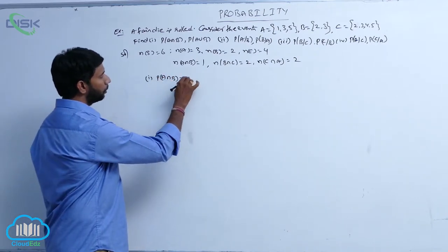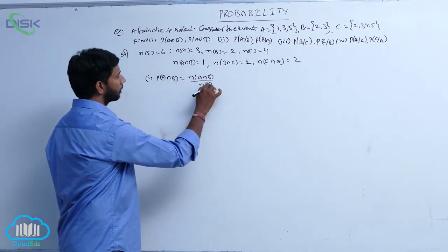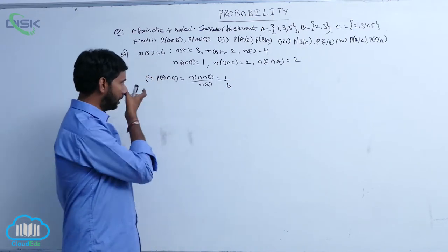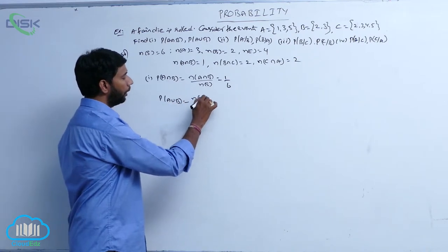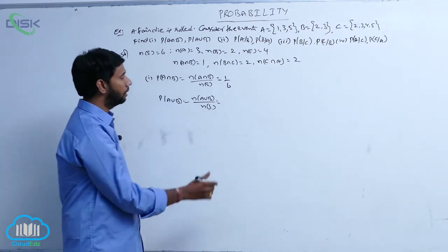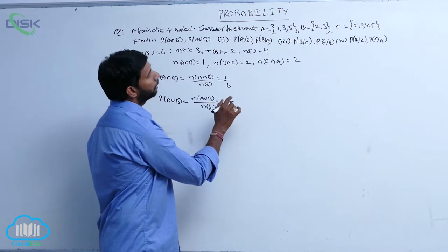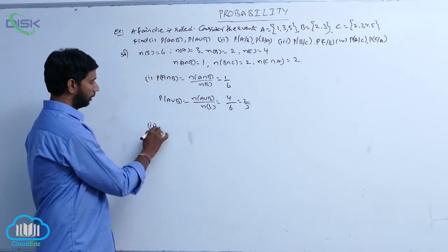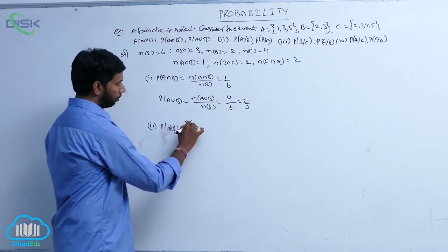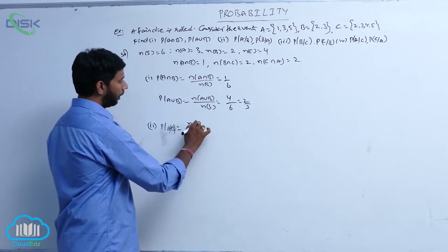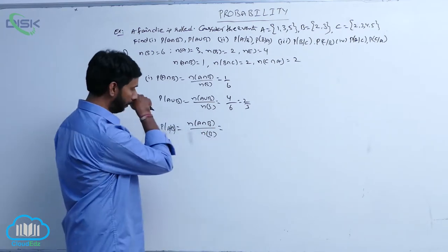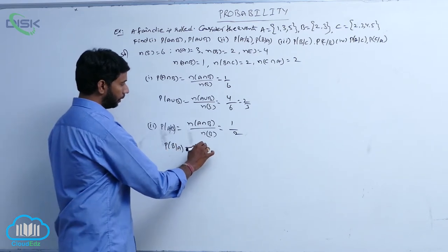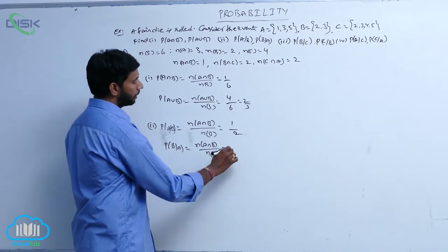P of A intersection B equals N(A intersection B) divided by N(S), which is 1 by 6. P of A union B equals N(A union B) divided by N(S), where N(A union B) equals 4, so it is 4 by 6, equal to 2 by 3. P of A given B equals N(A intersection B) divided by N(B), which is 1 by 2. P of B given A equals N(A intersection B) divided by N(A), which is 1 by 3.